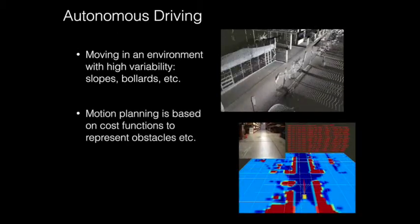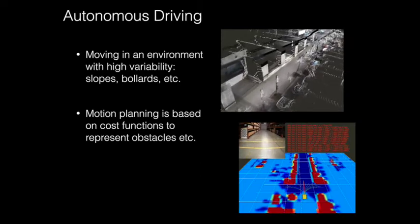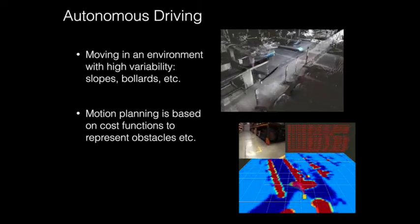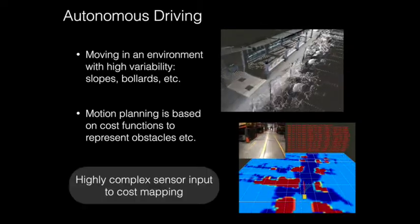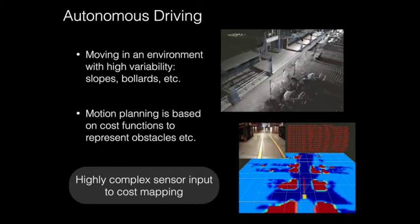When performing motion planning, we optimize our plan with respect to some cost function, representing obstacles and untraversable areas. This function has the highly complex task of mapping all features in our environment to cost the planner can act based on.